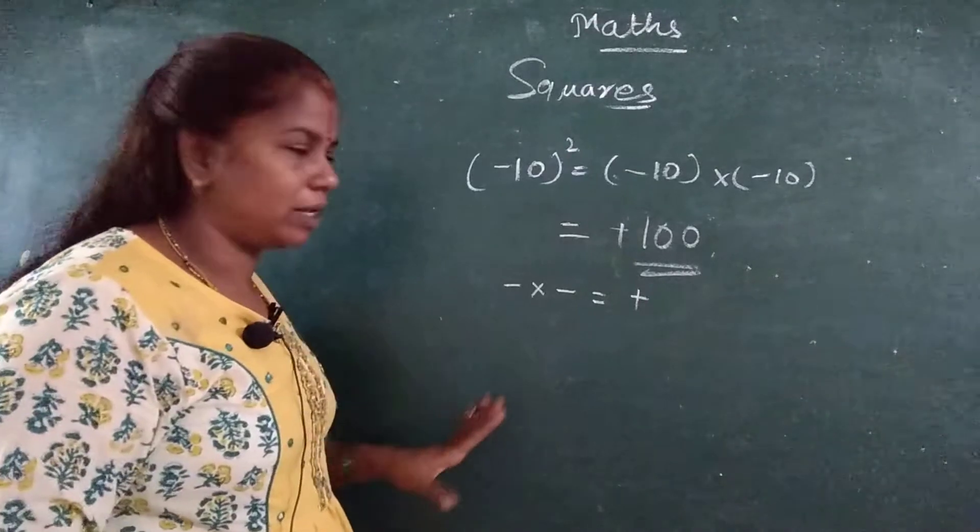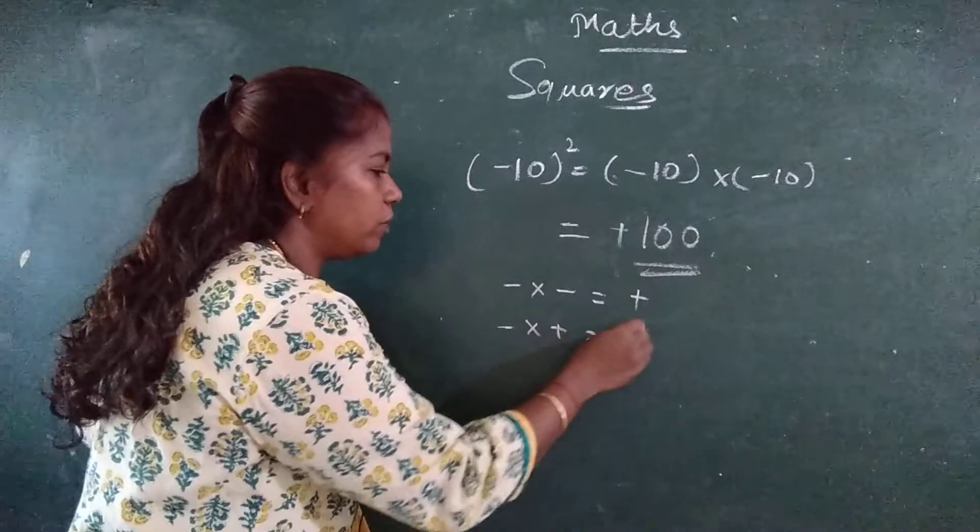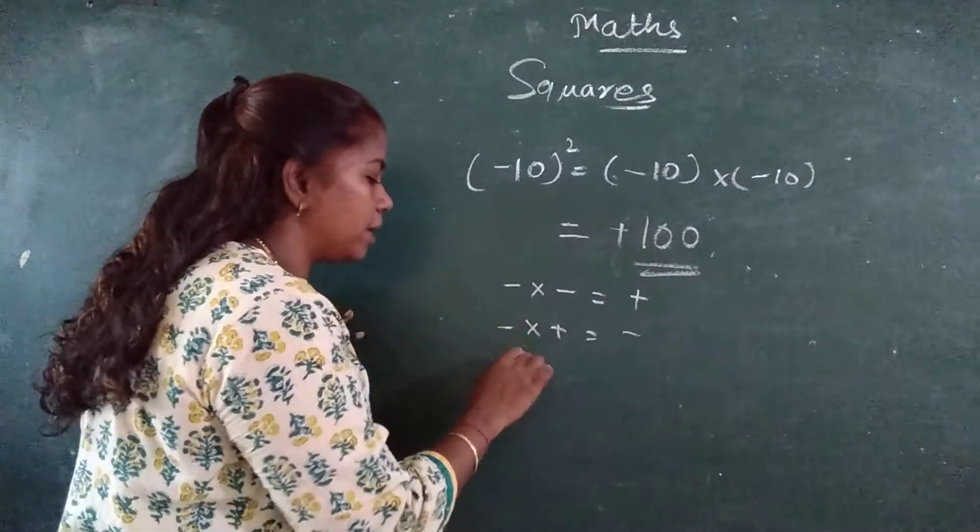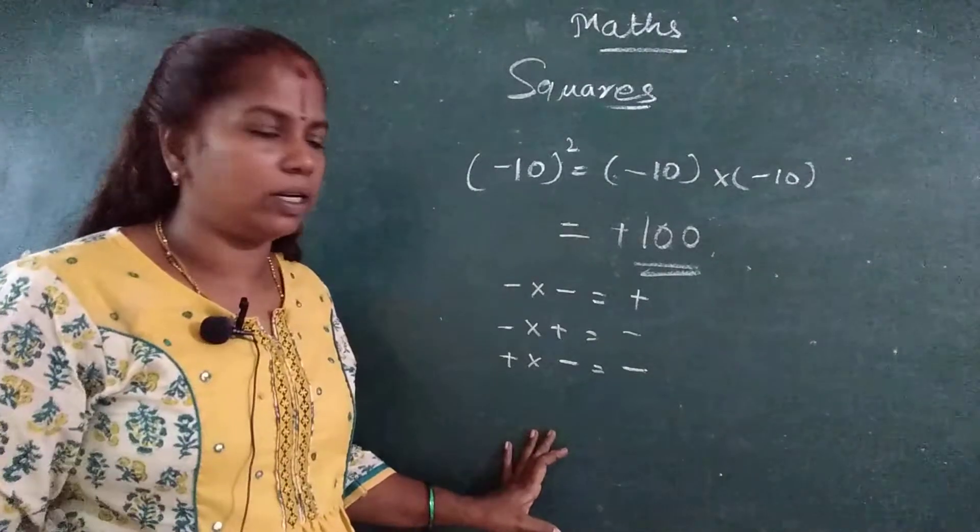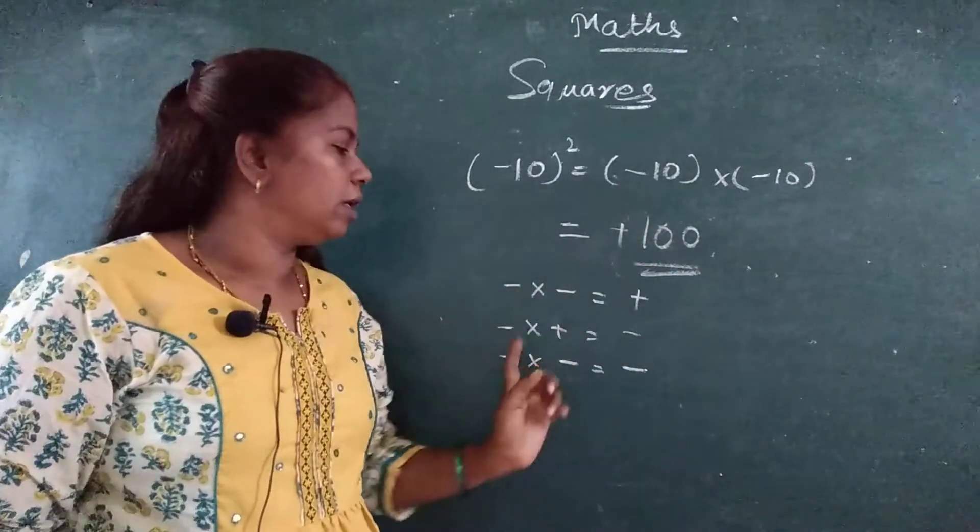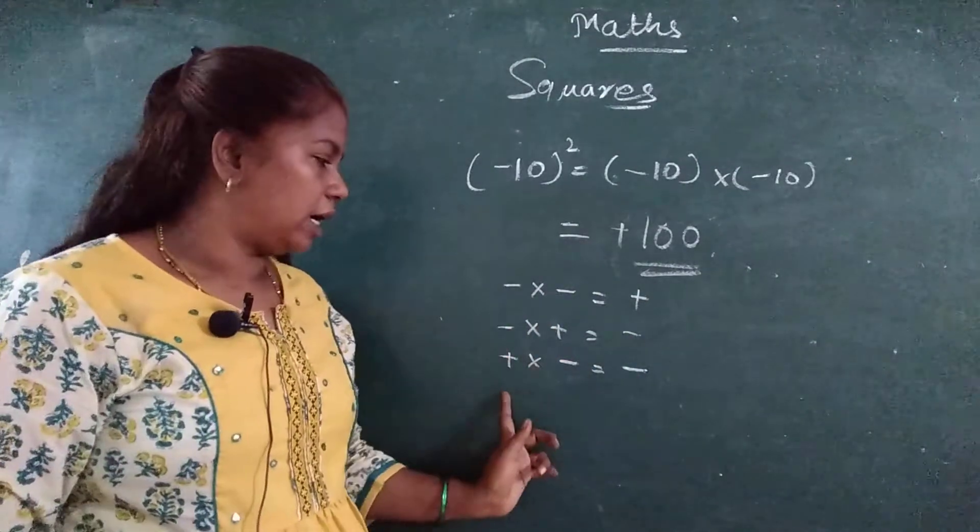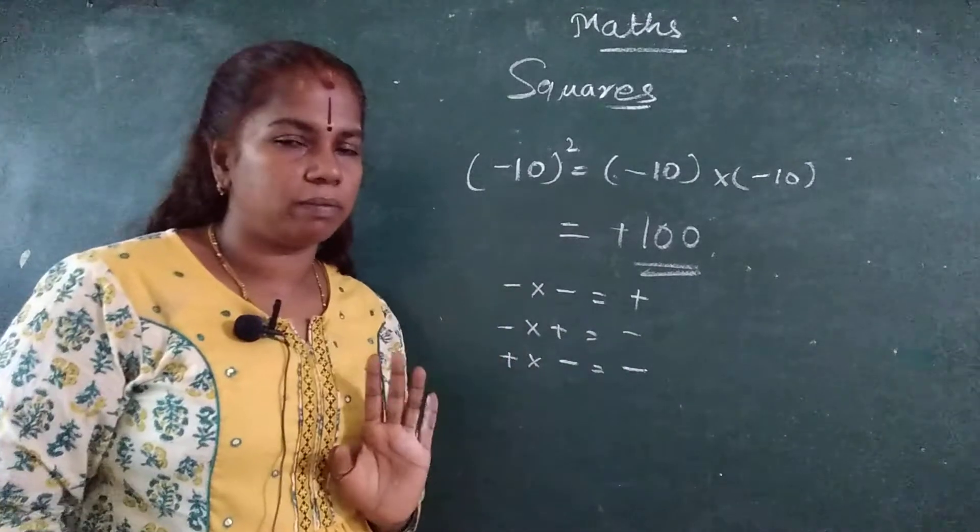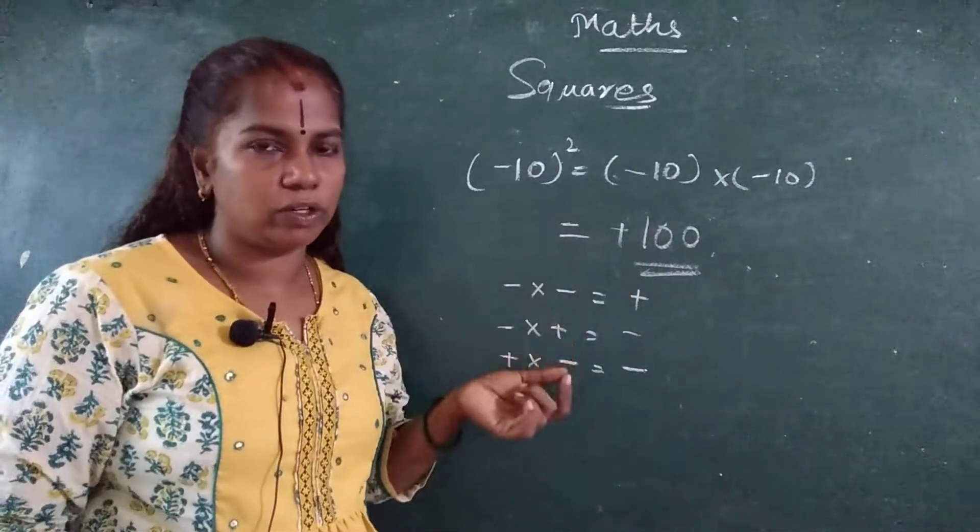Just giving you small example. Minus into minus will become plus. You will multiply, but it will become plus. Minus into plus, you will put minus. Plus into minus, you will put minus. Got it? If minus minus comes, then you have to put plus. If plus minus or plus and minus comes, you have to put minus.